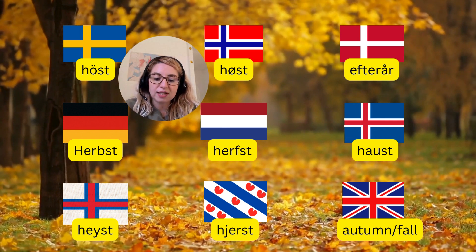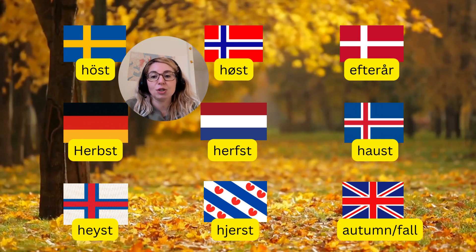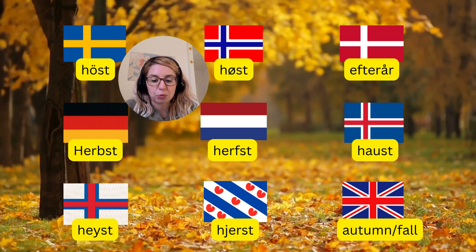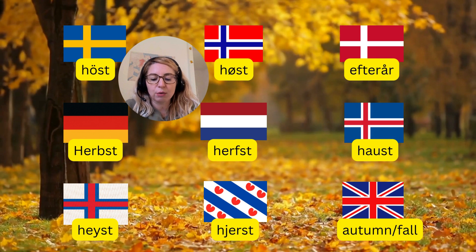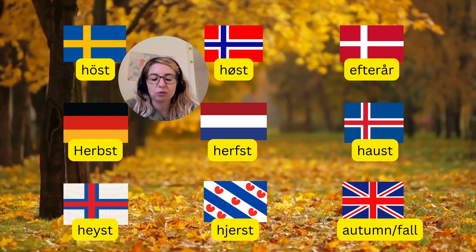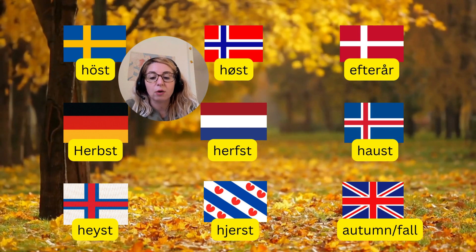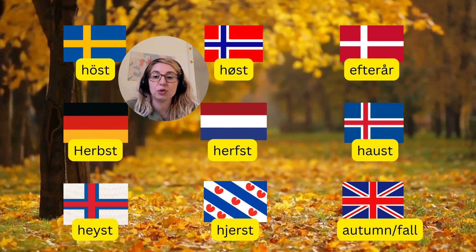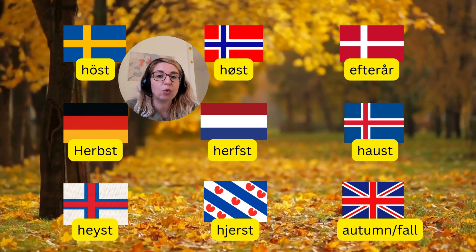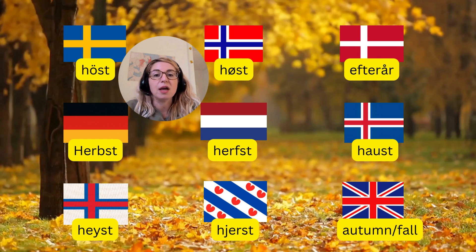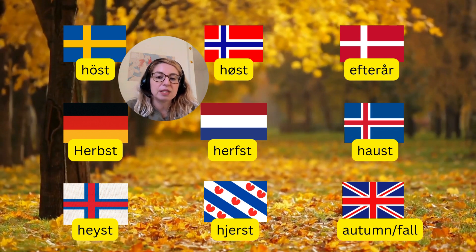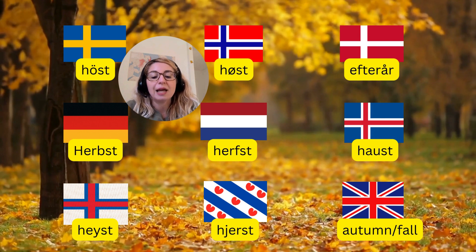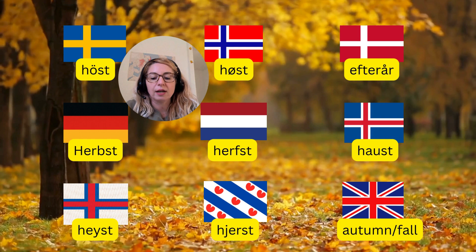The older English word for autumn was actually 'harvest', which is the cognate for the rest of the Germanic languages. It was used up until the late 14th century when it was gradually replaced by the word stemming from Latin, 'autumnus'. The Proto-Indo-European root most likely meant 'to pick' or 'to pluck', which makes perfect sense given the main activity during autumn. Compare with Latin 'carpere' meaning 'to gather', or Greek 'karpos'.